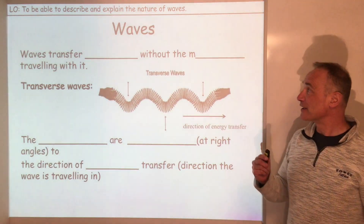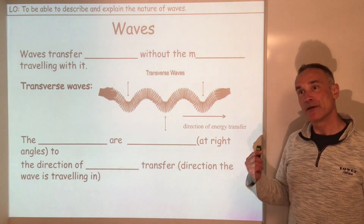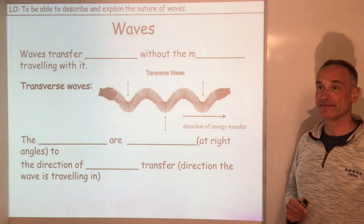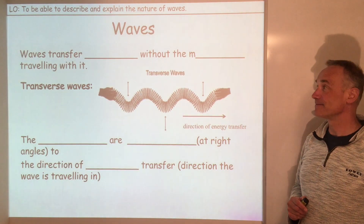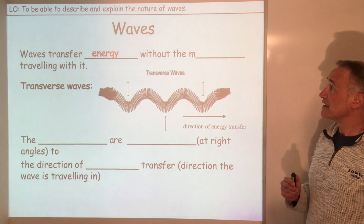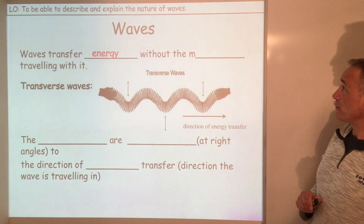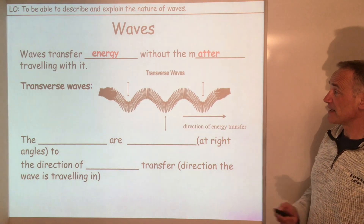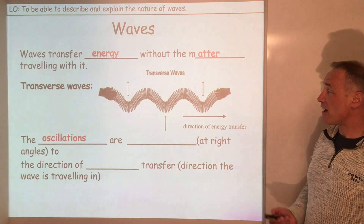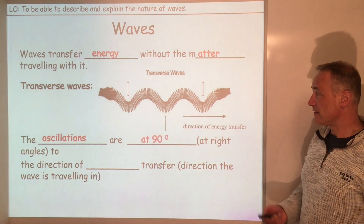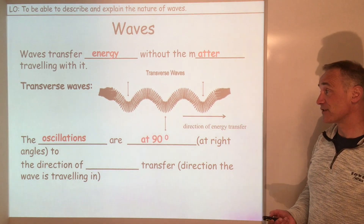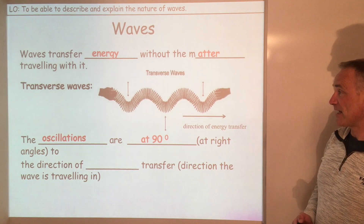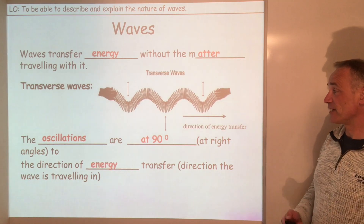Now I want you to have a quick think — pause the video and work through this. So we have: waves transfer energy without the matter travelling with it. The oscillations are at right angles, or 90 degrees, or perpendicular, to the direction of energy.